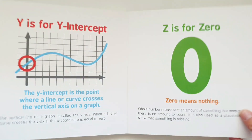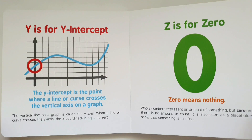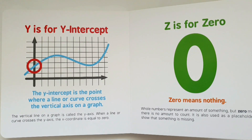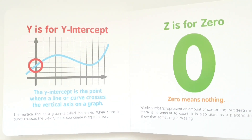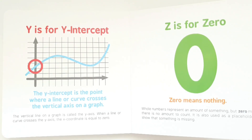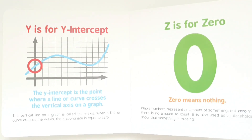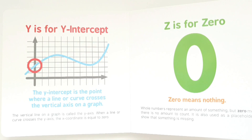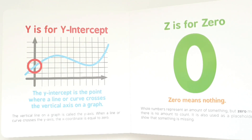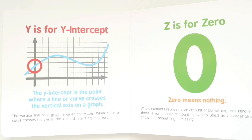Y is for y-intercept. The y-intercept is the point where a line or curve crosses the vertical axis on the graph. The vertical line on the graph is called the y-axis. When a line or curve crosses the y-axis, the x-coordinate is equal to zero.